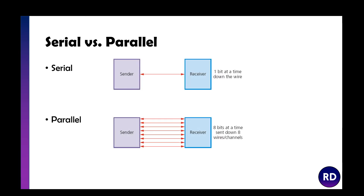As shown on screen, serial sends one bit at a time down the wire, whereas parallel can send eight bits down eight channels simultaneously. However, over a really long wire, if there's any damage or something doesn't work quite right, some bits could get out of sync. The receiver might get data in the wrong order and the message would be corrupted. So the rule is: short distances use parallel, long distances use serial.